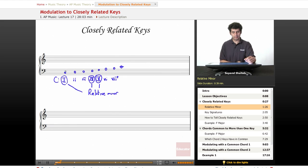So if we're thinking about what keys are closely related to C major, we find that one of them is first of all A minor, because it's the relative of C major. And then we have F major and its relative D minor. And then we have G major and its relative E minor.